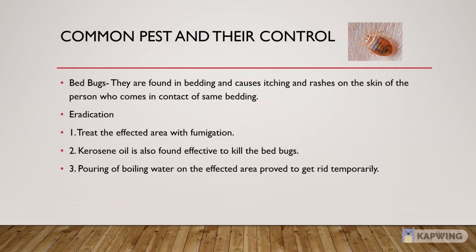Now we will discuss some common pests and their control methods. Number 1: Bed bugs. They are found in bedding and cause itching and rashes on the skin of the person who comes in contact with the same bedding. Control methods: 1. Treat the affected area with fumigation. 2. Kerosene oil is also found effective to kill bed bugs. 3. Pouring boiling water on the affected area provides temporary relief.